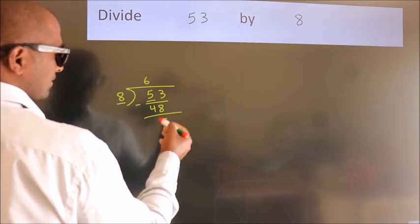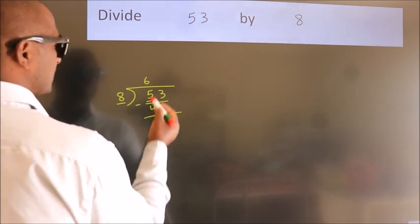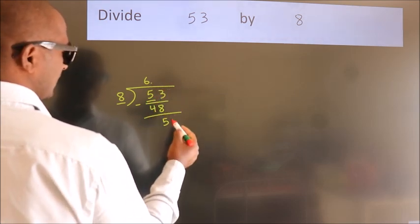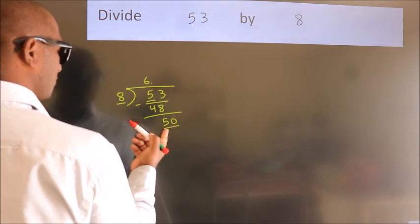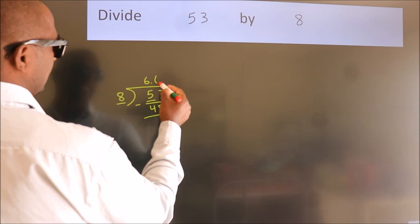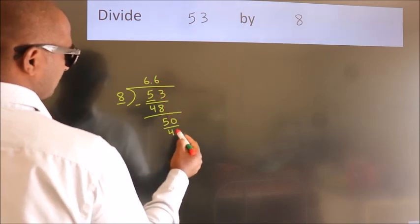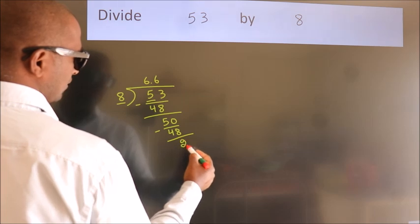After this, no more numbers to bring down. So what we do is, we put a dot and take 0. So 50. A number close to 50 in 8 table is 8 times 6, 48. Now we subtract. We get 2.